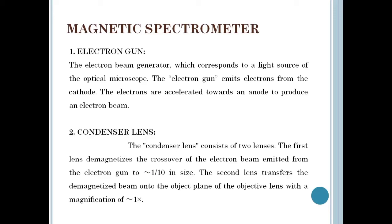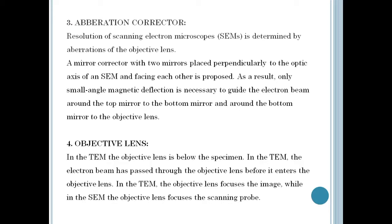The third part is the aberration corrector. The resolution of the scanning electron microscope is determined by aberrations of the objective lens. Both spherical and chromatic aberrations can be compensated by placing a 90-degree bending magnet and an electron mirror in the beam path before the objective lens. However, this approach has not led to widespread use of aberration correctors, partly because aberrations of the bending magnet can be a serious problem. A mirror corrector with two mirrors placed perpendicular to the optic axis and facing each other is proposed, requiring only small-angle magnetic deflection of approximately 50 milliradians — sufficiently small to avoid deflection aberrations.